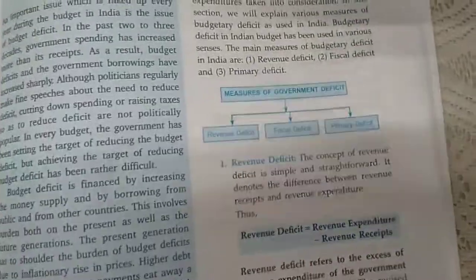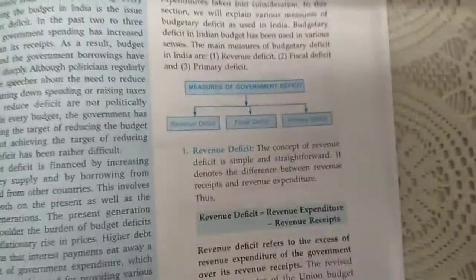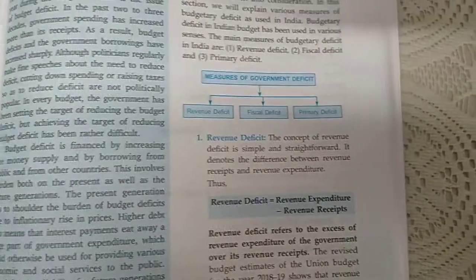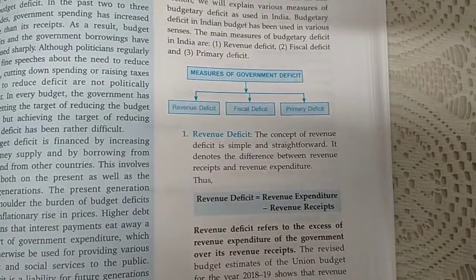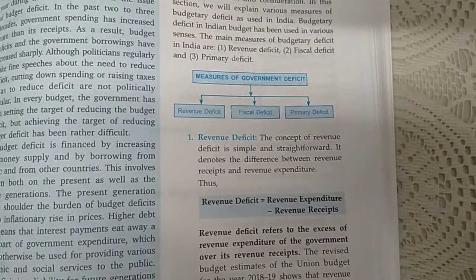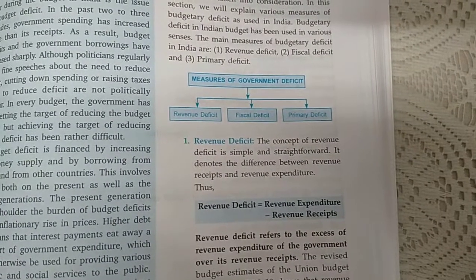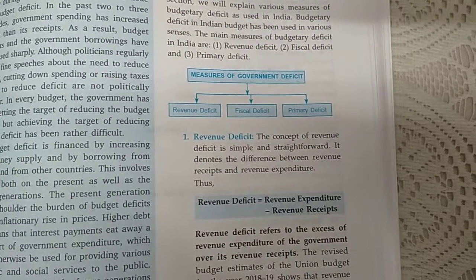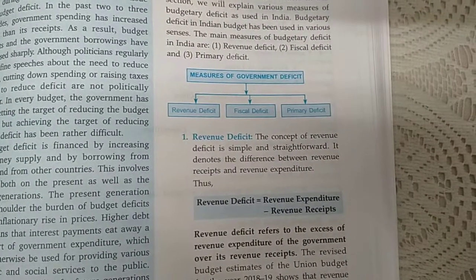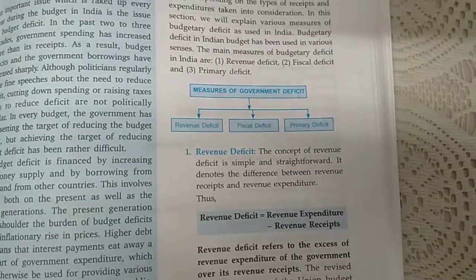Now coming to the various measures of government deficit, there are three kinds of deficit: revenue deficit, fiscal deficit, and primary deficit.